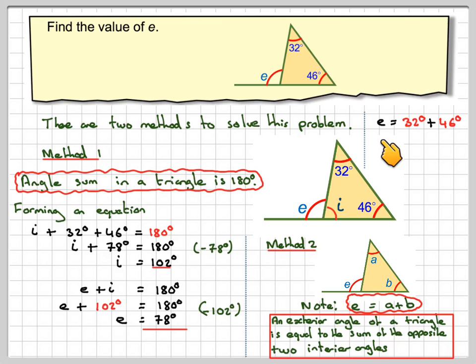So knowing that fact, we can say that E straight away is 32 plus 46, which is equal to 78, which is much less working out, obviously, than what we did over here. So just repeat, E is equal to the sum of the opposite two interior angles.